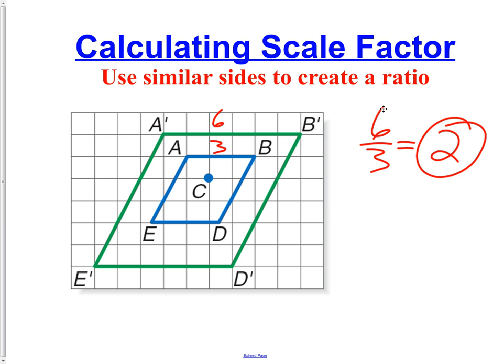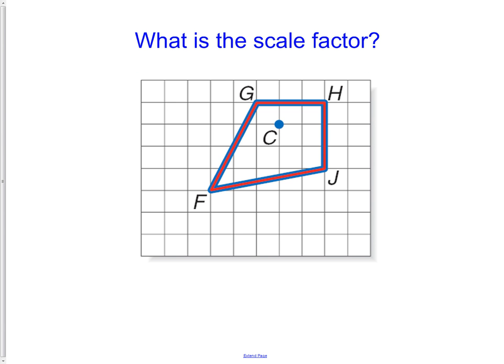What is the scale factor in this picture? We have a blue quadrilateral and a red quadrilateral directly on top of each other. If we measure from G to H, it's three; from G-prime to H-prime — which is hidden behind it — it's also three. That gives us three over three, which is a scale factor of one. Whenever your scale factor is one, the object has not changed in size.